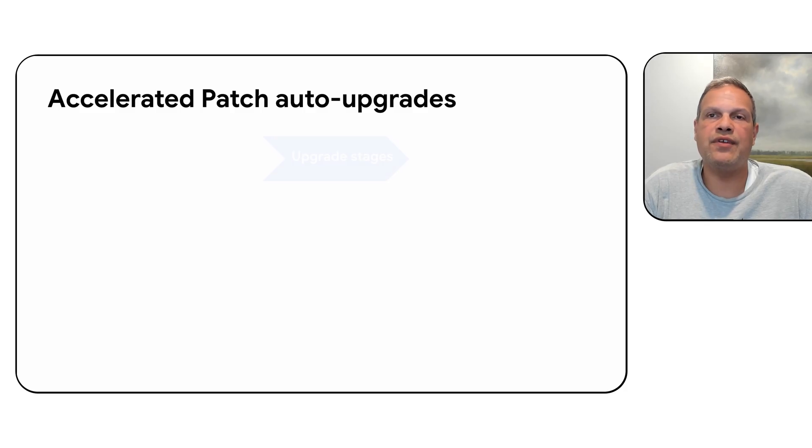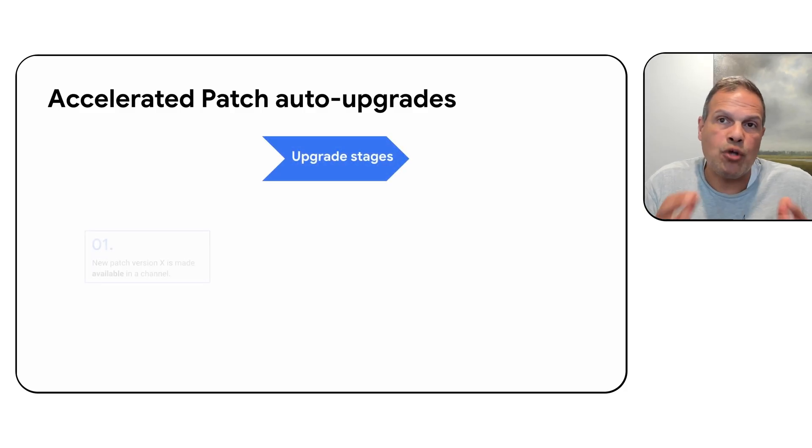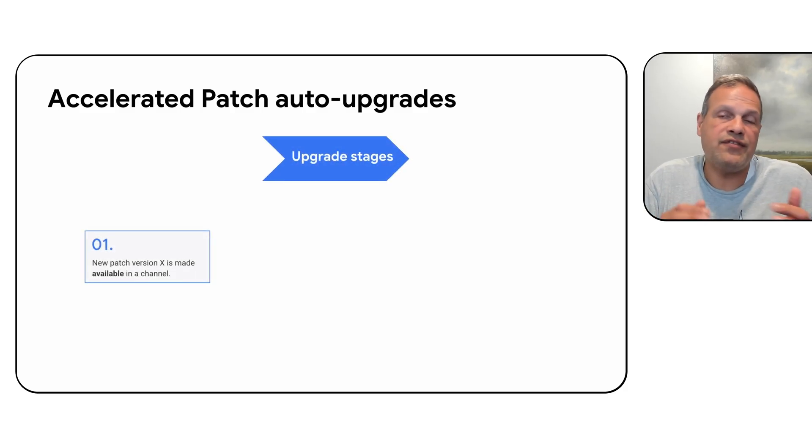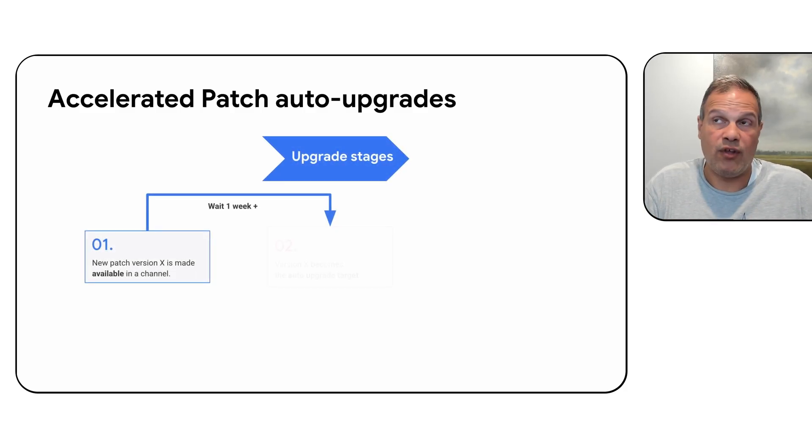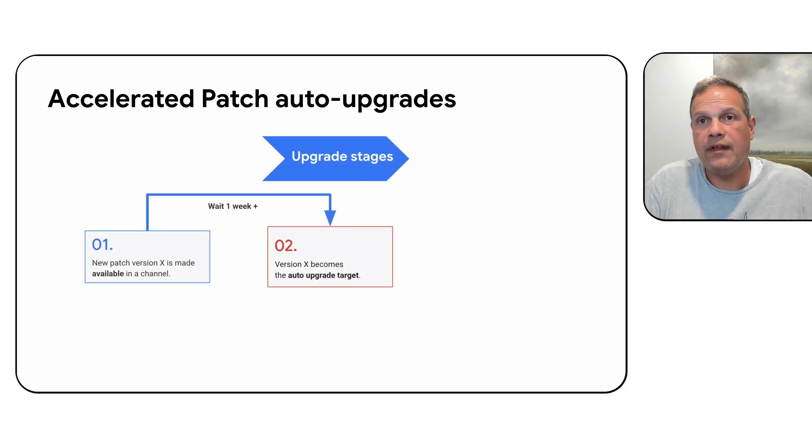Our first upgrade enhancement is accelerated patch auto upgrades. What this means is that whenever a new patch becomes available in any given channel, we will now immediately make that your auto upgrade target. Prior to this, we used to have a soak time, and you'd have to wait until it became the default before the upgrade would occur.